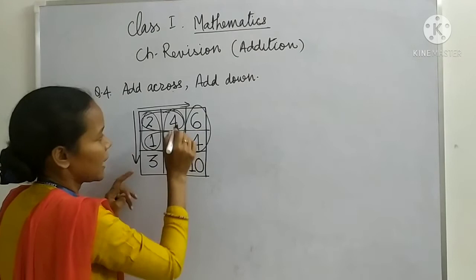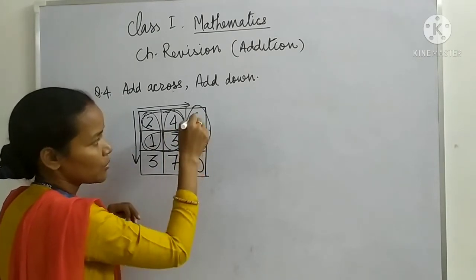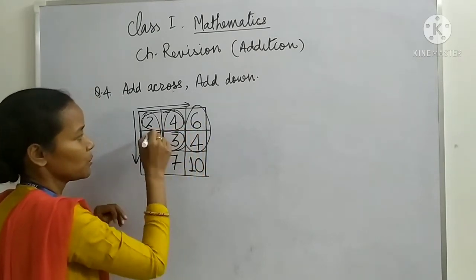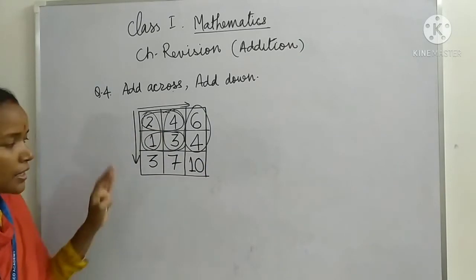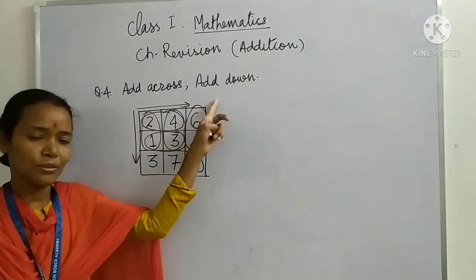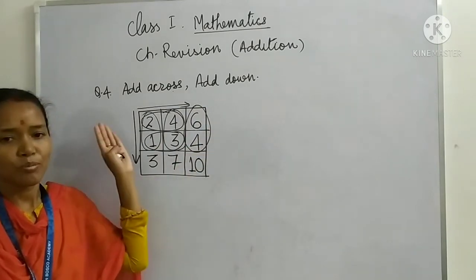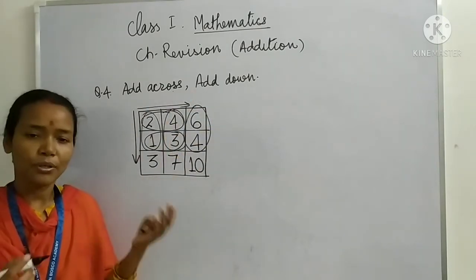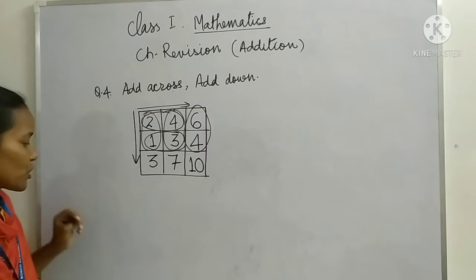Across you did twice and add down you did thrice. 1, 2, 3, 3 times. So this we have to understand, add across add down. So next question is question number 4 that you have to do on your own. Now let's see question number 5.